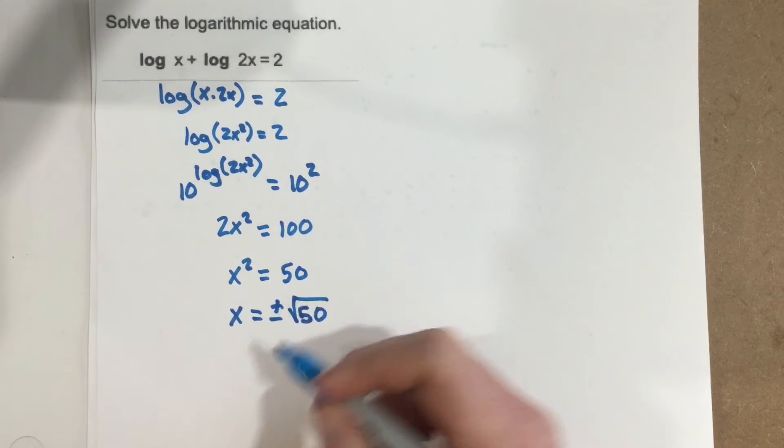So this negative root 50 is not going to work, so we just get x equals positive root 50.